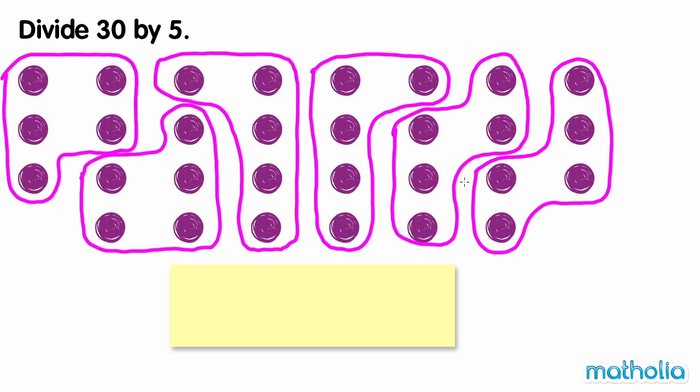There are six groups of five dots. So thirty divided by five equals six.